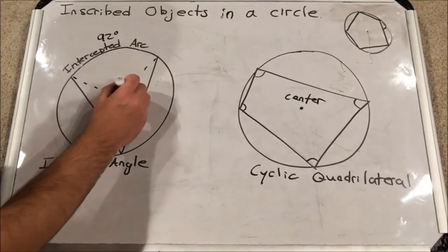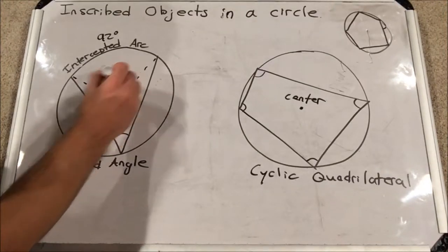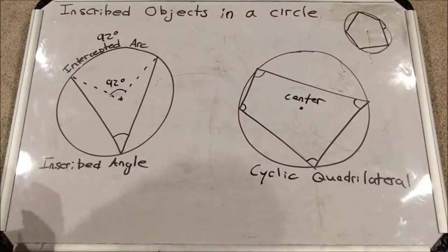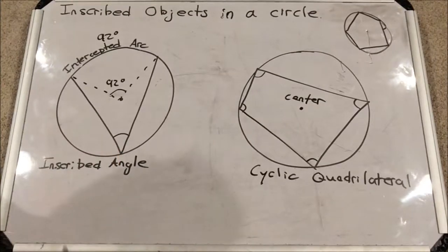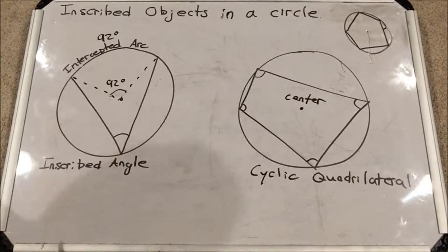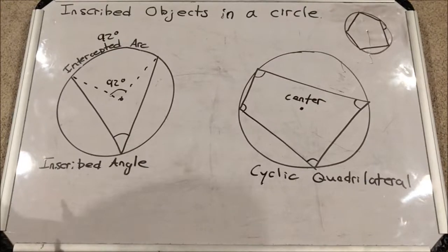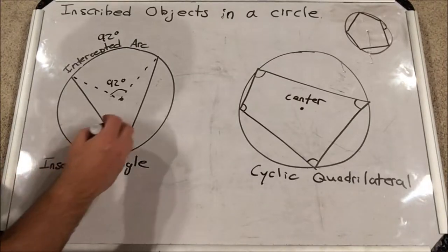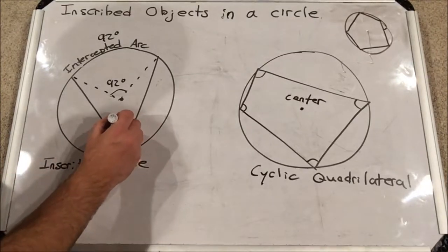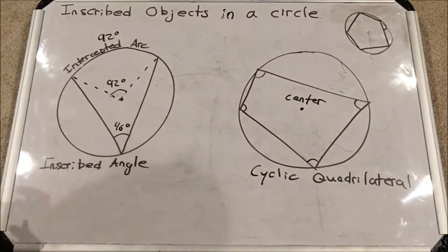Okay, that's true. What do you think the measure of this angle is? Do you think it's related? Do you think it's unrelated? Well, in fact, it is related. It's exactly half the size of the intercepted arc, which in this case would make it 92 divided by 2, 46 degrees. All inscribed angles are exactly half of the intercepted arc's angle measure.